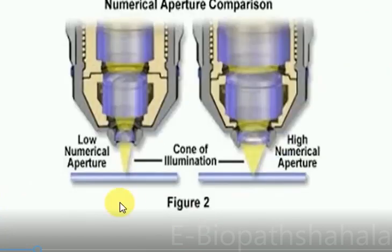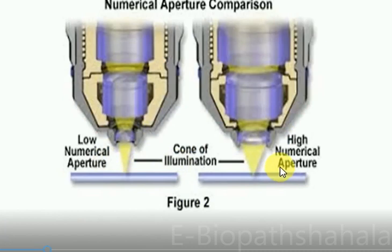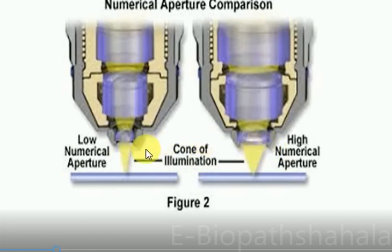Here we can see a comparison: on one side, low numerical aperture with a narrow cone of illumination, and on the other side, high numerical aperture with a wider cone, giving high resolving power. The wider space corresponds to higher resolving power and higher magnification, while the narrower cone gives lower resolving power and lower magnification.